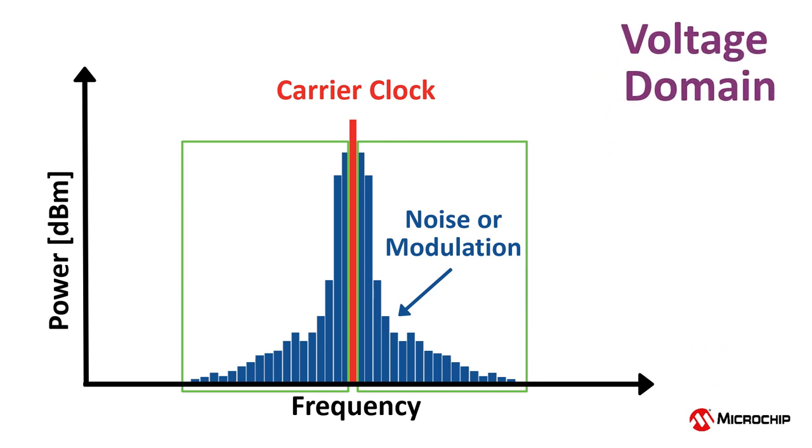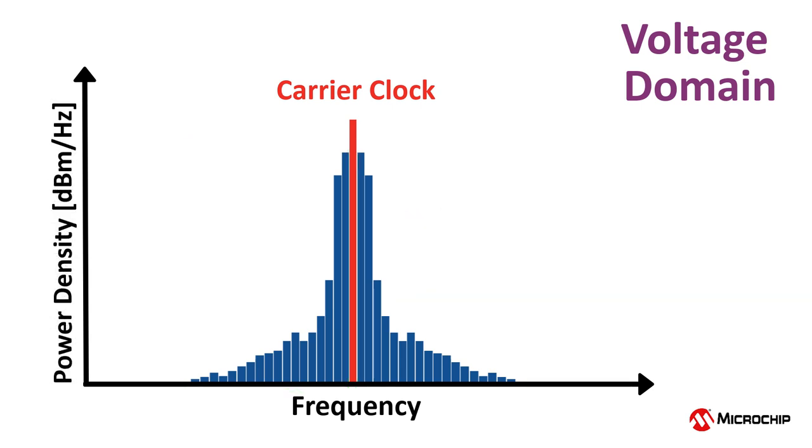Another way to display this is using a power spectral density plot, as we discussed in the previous videos, with units of dBm per hertz.